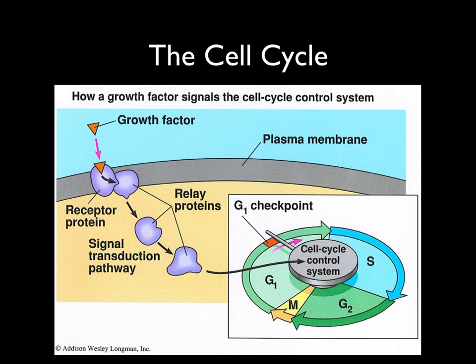This next figure shows what happens when a growth factor controls the cell cycle or signals it to move from one phase to the next. Some sort of growth factor — whether a hormone or other chemical factor — binds to a receptor protein on the surface of a cell. That receptor protein then sends a signal to the cell's control center, telling the cell it's okay to move past a checkpoint and into the next phase of the cycle.